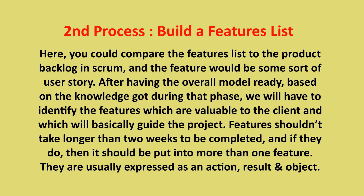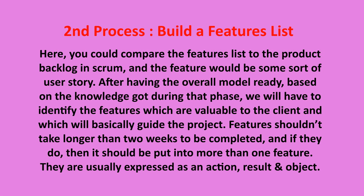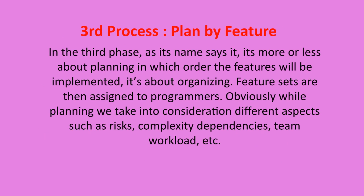The second process is build the feature list. You could compare the feature list to the product backlog in Scrum, and the feature would be some sort of user story. After having the overall model ready, we identify the features which are valuable to the client and which will guide the project. Features shouldn't take longer than two weeks to be completed; if they do, they should be broken into more than one feature. They are usually expressed as an action, result, and object.